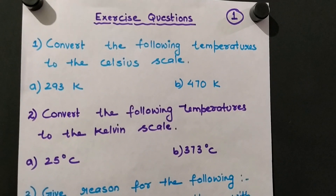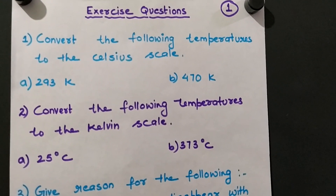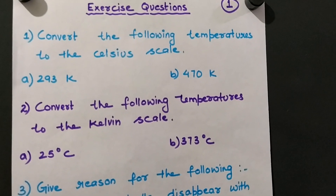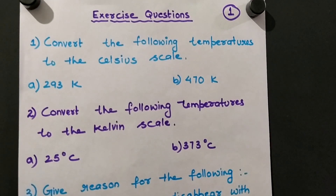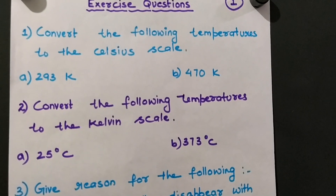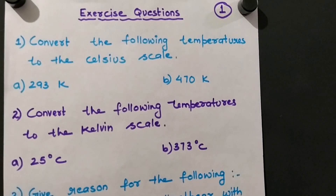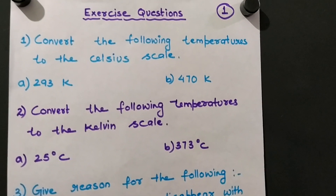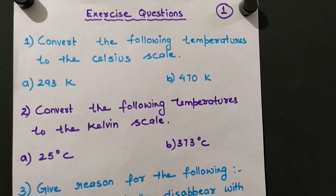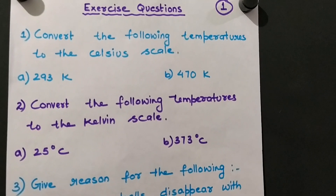For question 2, unlike the first question where the temperature was given in Kelvin, here we will use the same formula C + 273 = K, but we will put the given temperature — 25°C — in place of C and calculate the value of K.